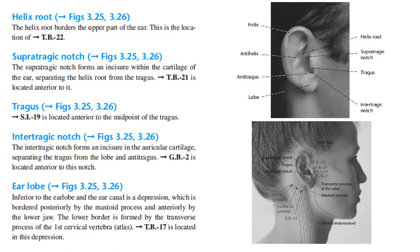Next, we have the earlobe. Inferior to the earlobe and the ear canal is a depression, which is bordered posteriorly by the mastoid process and inferiorly by the lower jaw. The lower border is formed by the transverse process of the first cervical vertebra. Triple Burner 17 is located in this depression.